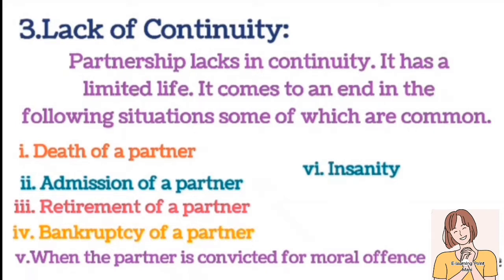نمبر 3 پر تسلسل کی کمی — شراکتداری میں تسلسل کا فقدان ہے، اس کی زندگی محدود ہوتی ہے اور مندرجہ ذیل حالات میں ختم ہو جاتی ہے: نمبر 1 پارٹنر کی موت، نمبر 2 پارٹنر کا داخلہ، نمبر 3 پارٹنر کی retirement، نمبر 4 پارٹنر کا دیوالیا پن، نمبر 5 جب ساتھی کو اخلاقی جرم کی سزا دی جائے، نمبر 6 جنون۔ یہ عام حالات ہیں جن کی بنا پر partnership ختم ہو جاتی ہے۔